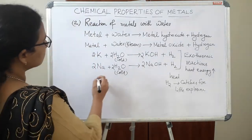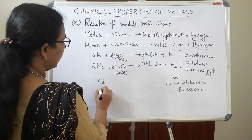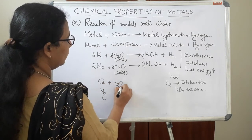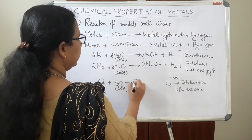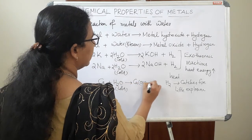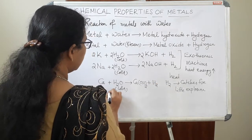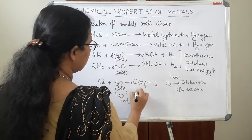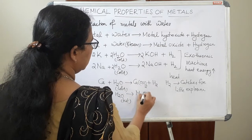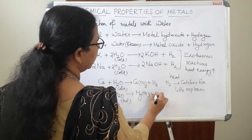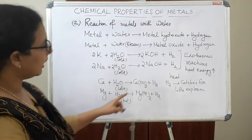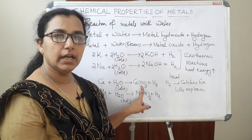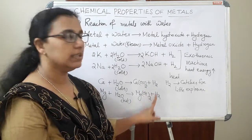Now consider another two metals — calcium and magnesium. In the case of calcium, we can use cold water and we will get calcium hydroxide Ca(OH)₂ and hydrogen. In the case of magnesium, we can use hot water and we will observe magnesium hydroxide and hydrogen gas. In these two cases also, we see the corresponding hydroxide and hydrogen gas.